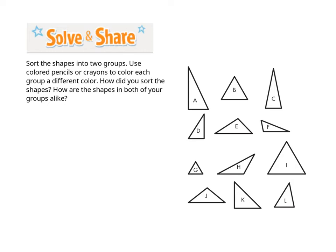We can sort shapes by their attributes. When I look at these shapes, I see there are some triangles that have a right angle in them. So I'm going to color all of the triangles that have a right angle in them because they look a bit different from the other triangles. There are three with a right angle, and the rest have other kinds of angles.